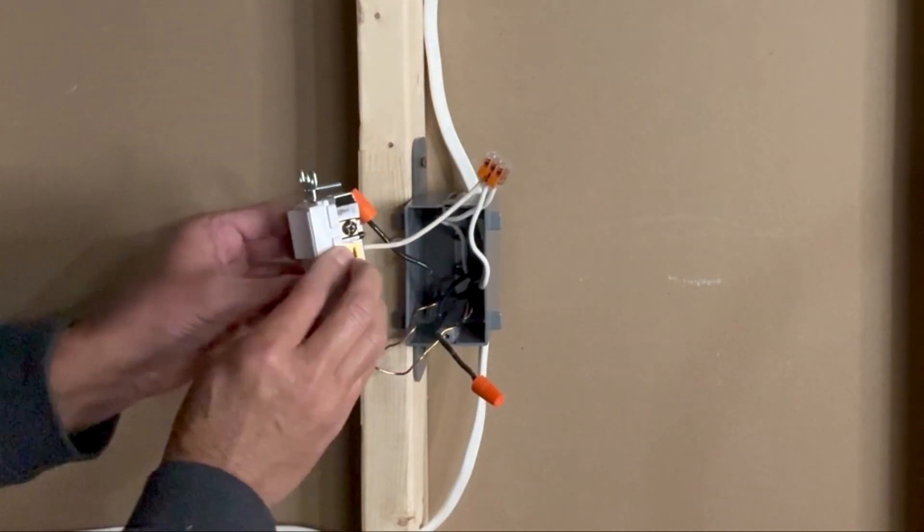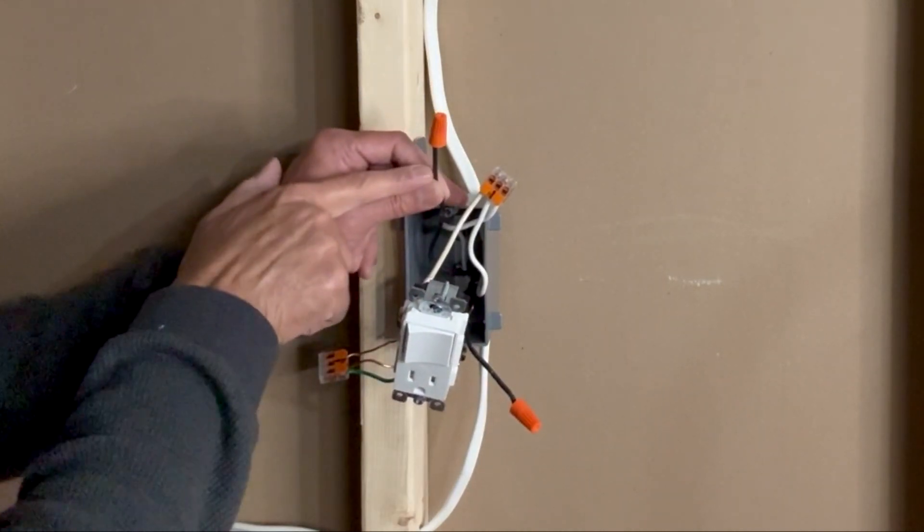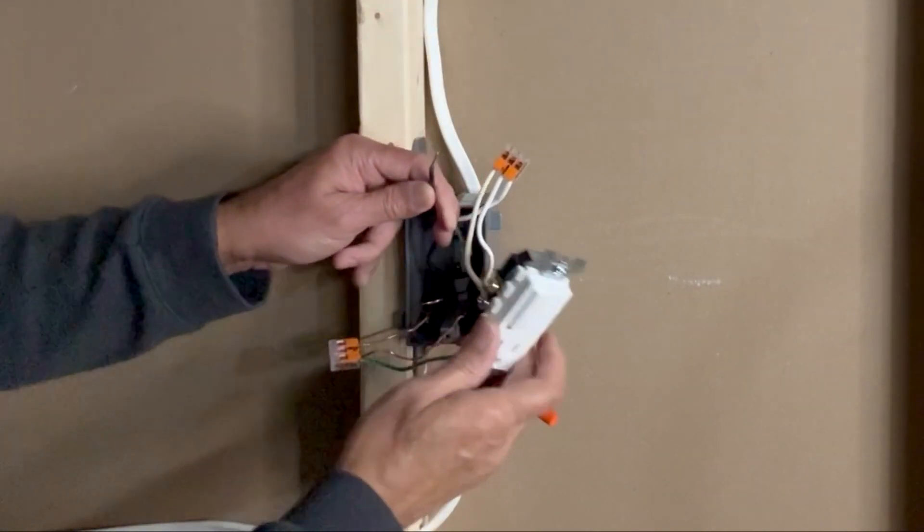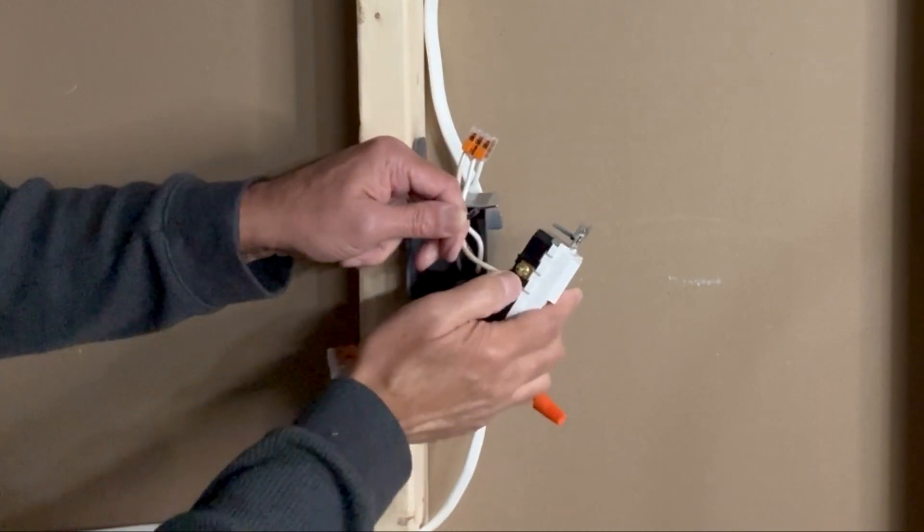Next I will connect the black load wire. This was the black wire going to the light fixture and this wire will connect to this brass screw.